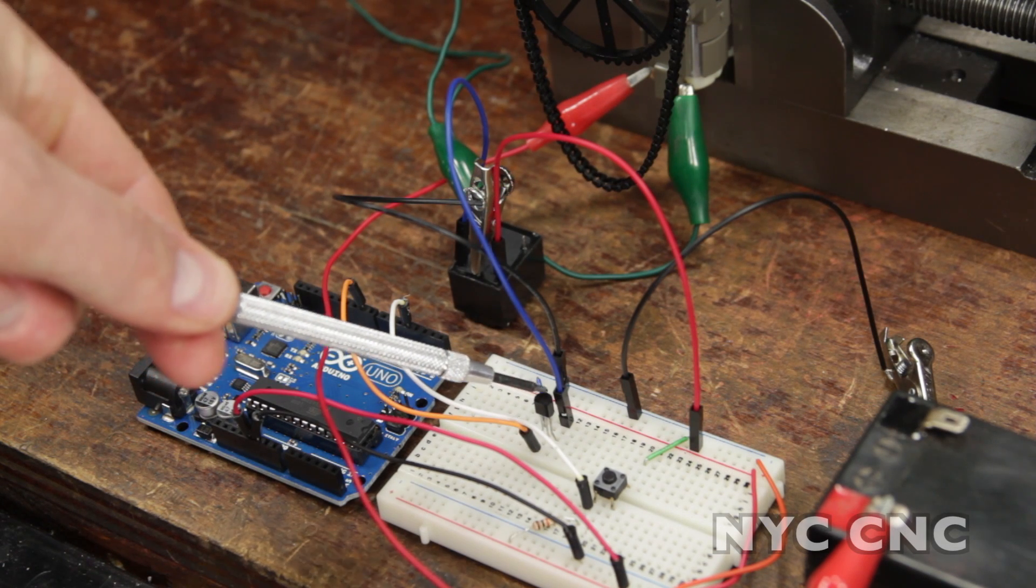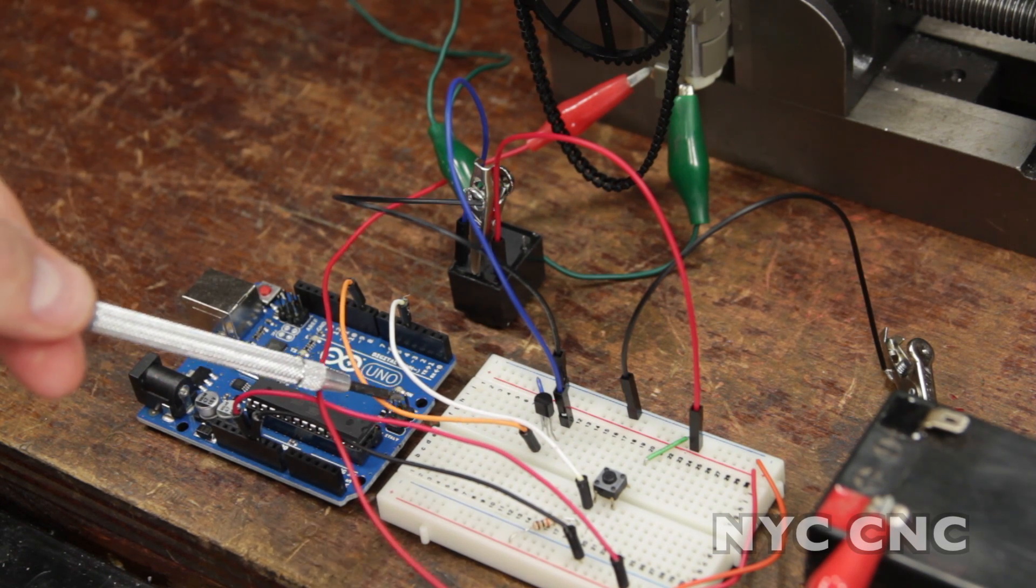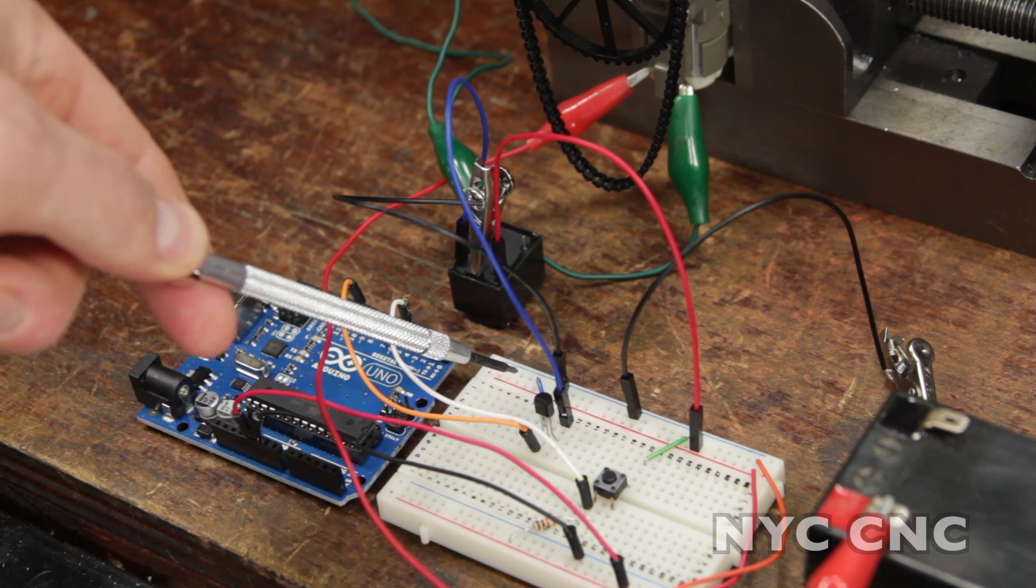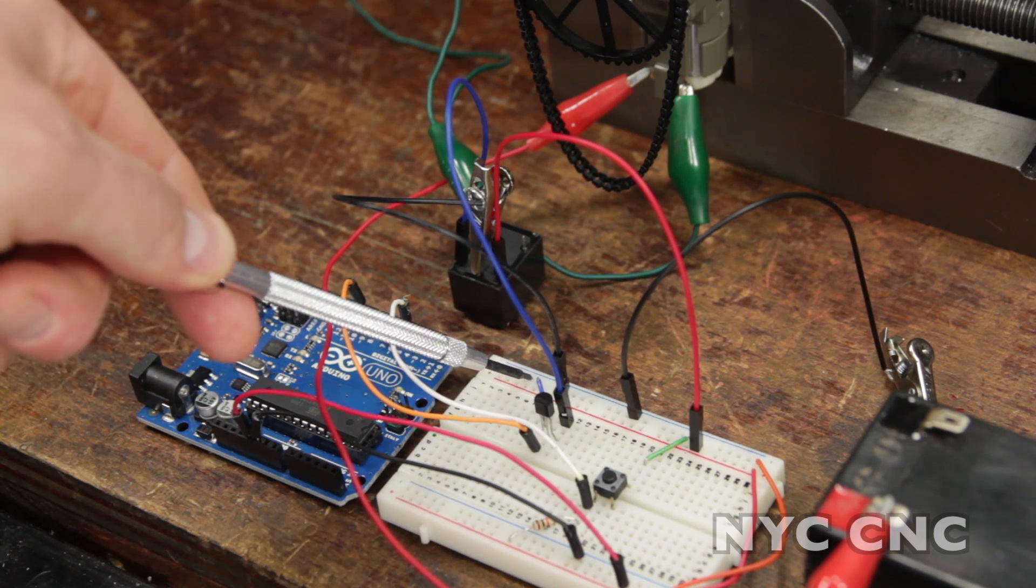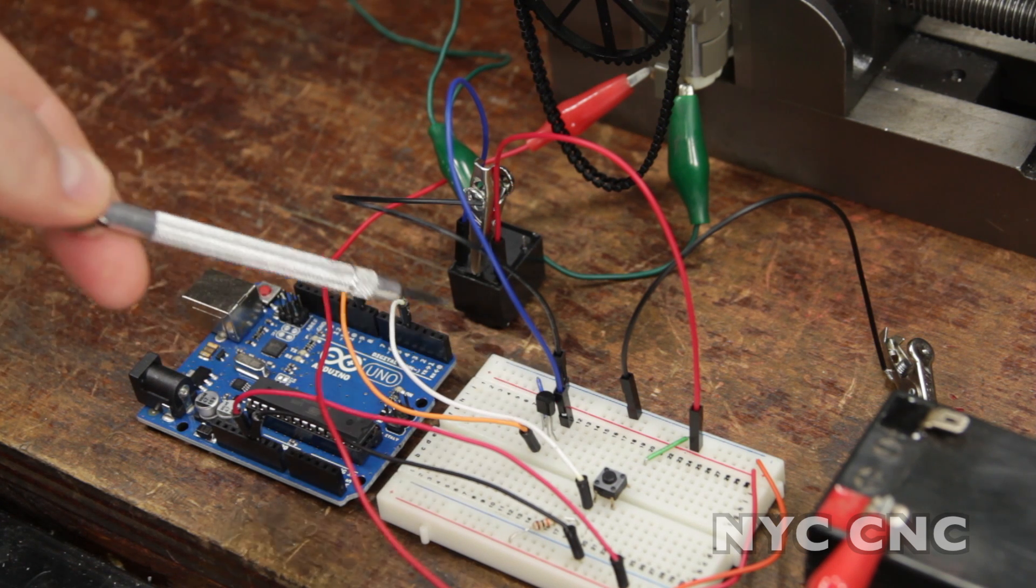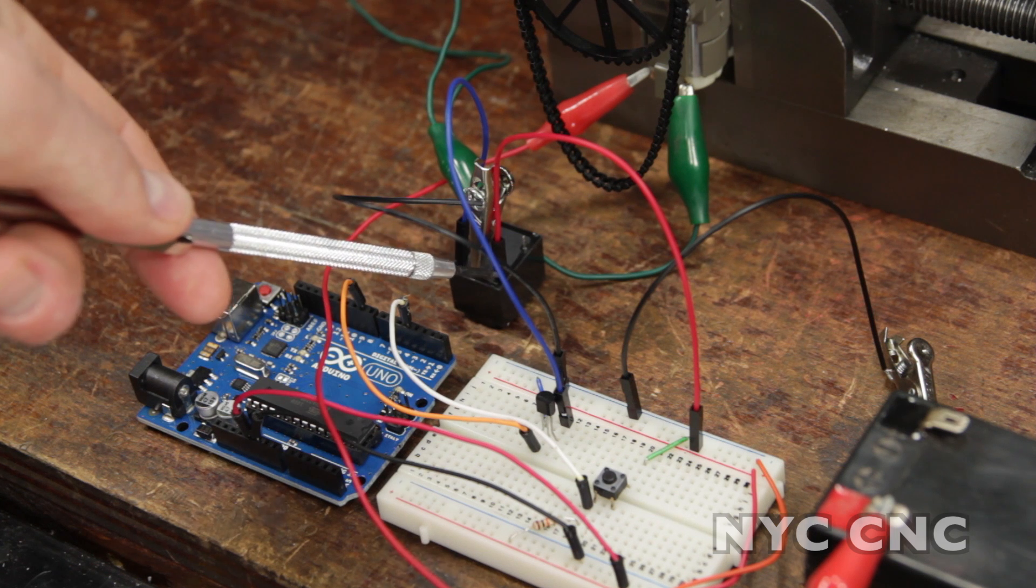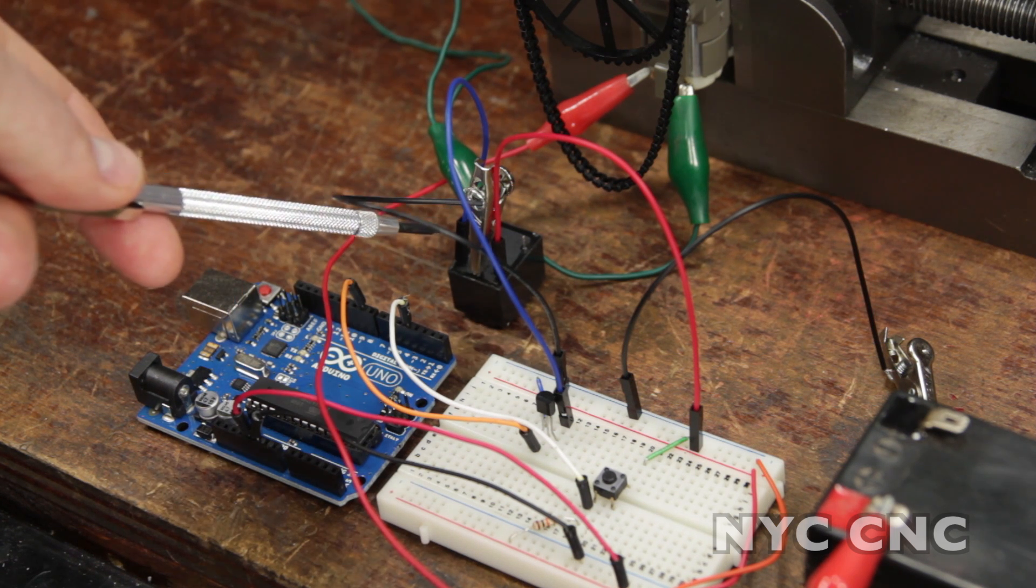The center pin of the transistor is connected via this orange jumper wire to Arduino digital pin 9. The left lead of the transistor is connected directly to ground and the right pin of the transistor is connected to the left lead on my relay. These are the two leads, the red and the blue, that open and close the relay coil.